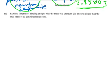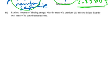Part E. Explain in terms of binding energy, why the mass of a uranium 235 nucleus is less than the total mass of its constituent nucleons. Okay. So, this is just wanting you to explain the concept of binding energy, and where that energy comes from.